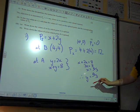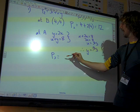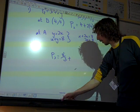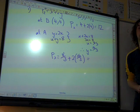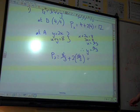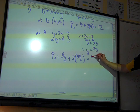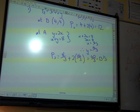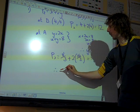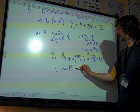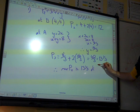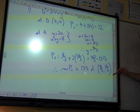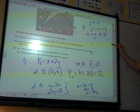So we need to work out the value of P at that point. P2 is x plus 2 times y. We've got 8 over 3 plus 32 over 3. That's 40 over 3, which is 13 and a third. So that was our maximum value. Therefore, the maximum value of P2 is 13 and a third at the point 8 over 3, 16 over 3. That actually felt like quite a lot of work for two marks.